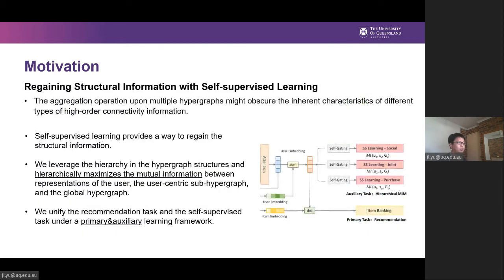However, it should be noted that the aggregation operation might also obscure the inherent characteristics of different types of high-order collective information, since different channels would learn embeddings with varying distributions on different hypergraphs. To compensate for this aggregation loss, we innovatively integrate self-supervised learning into the training of MHCN to regain the collective information with hierarchical mutual information maximization. Finally, we unify the recommendation task and the self-supervised task under a joint learning framework for better recommendation performance.